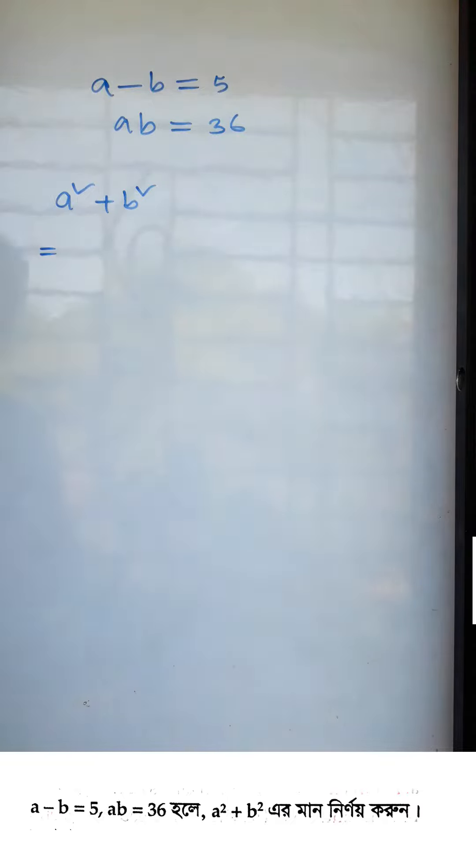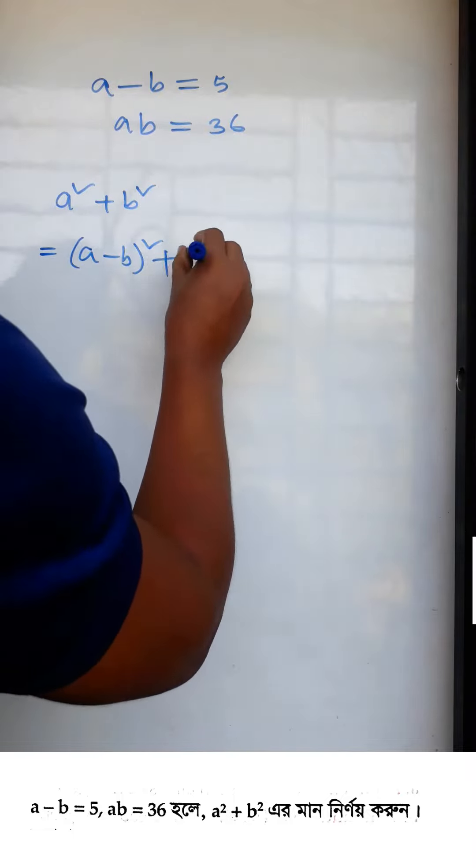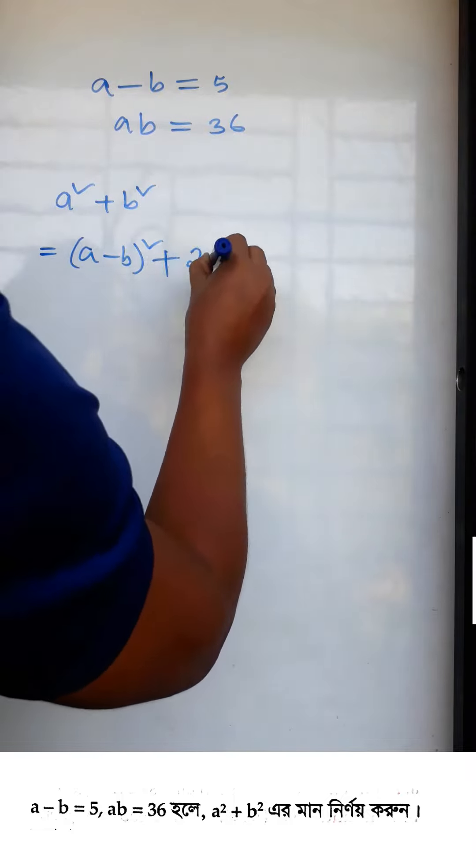We can use the identity: a square plus b square equals a minus b whole square plus 2ab. So we substitute: a minus b whole square plus 2ab.